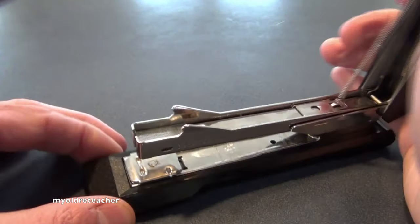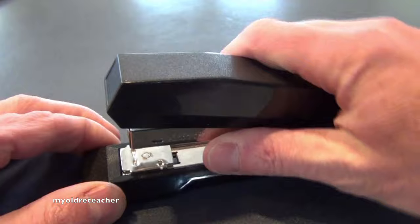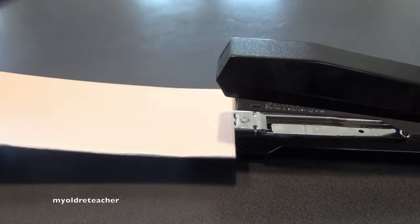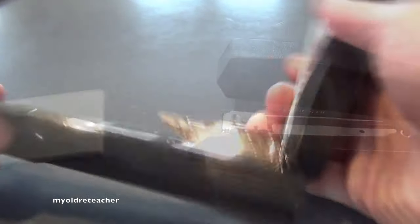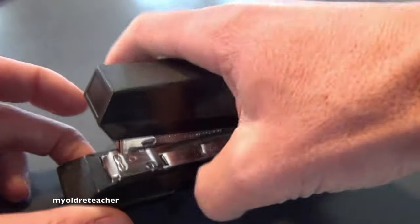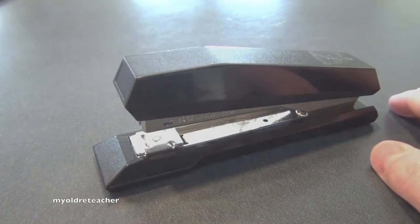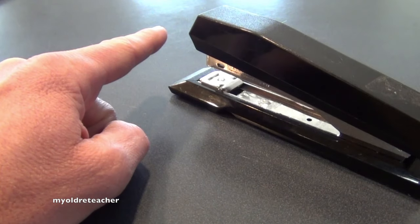For instance, staplers are complicated things. We observe their many parts. Staplers are ordered things. We observe that the many parts work together to perform a function. Staplers are designed and made by people who are smart. Staplers do not appear out of thin air.